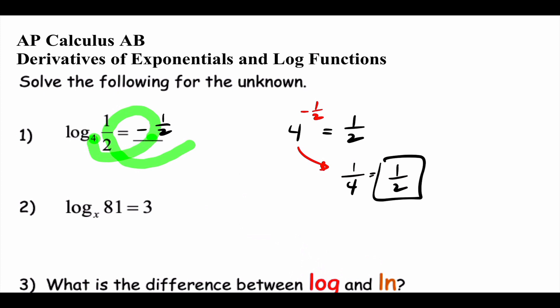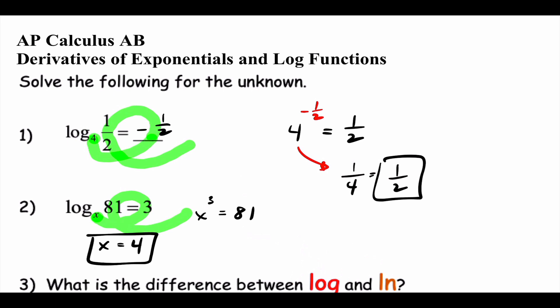The next problem is finding the missing base. X to the third power equals 81. X would have to be positive 4, because 4 times 4 times 4 makes 81. So that's logs — we use logs when we don't know what the exponent is.